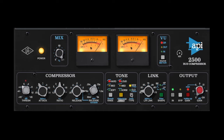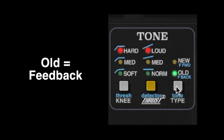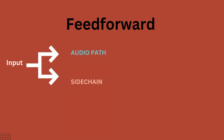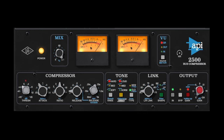New and Old give two very different distinct tones — New is a lot faster, snappier and more modern, while Old is smoother, a little slower and more vintage sounding. In feedforward mode, the signal is split at the input stage. In feedback mode, the audio path is fed by the input but the sidechain is fed by the output, which creates a delay in the sidechain — the signal has to travel through the compressor circuit untouched to the output and then back. That delay makes the compressor a little slower in general and less snappy.